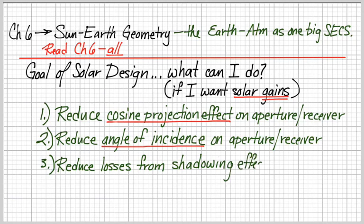So we reduce the cosine projection effect. That's going to be a large-scale, seasonal, if not annual, orientation of our collectors. Reducing the angle of incidence is more of a fine-tuning of that larger cosine projection effect. And then we also want to, when we want solar gains, we want to reduce losses from shadows, from trees, from obstructing objects. And in order to do those things, we're going to need to know about angular relationships and the way that angles and time are one in solar energy design.